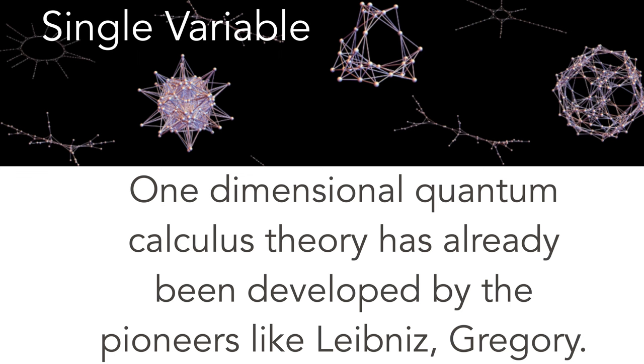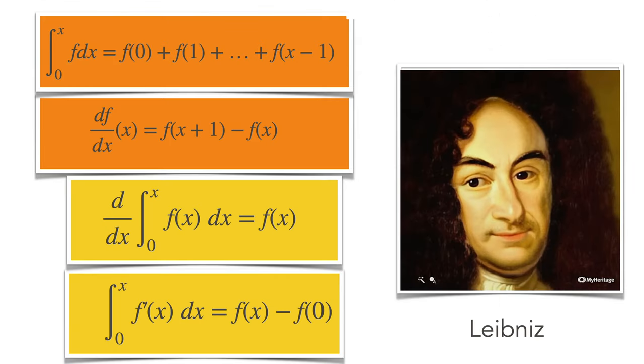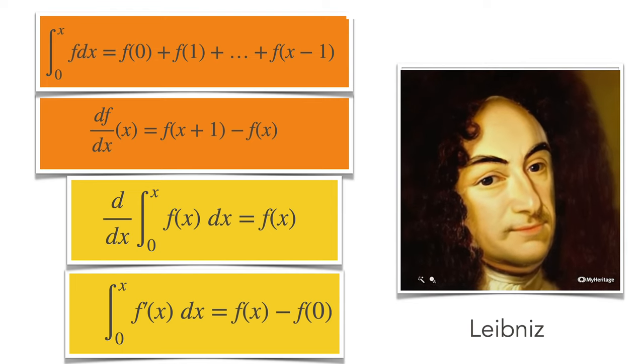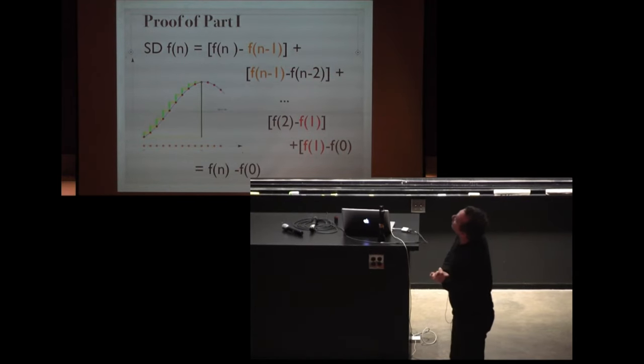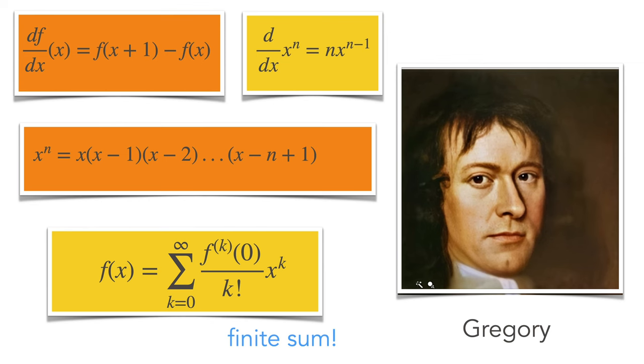Let's look at single variable calculus. The founders like Leibniz or Gregory already developed this. Here's the fundamental theorem of calculus. When you take the derivative of the sum, you get the function back. If you integrate the derivative, you get the difference of function values. Leibniz, when he understood this, actually expressed it in a discrete way. Here's the proof of the first result from 2013. And this is Taylor's theorem. Taylor's theorem is generally true for any function; it doesn't need any regularity if you look at the discrete.